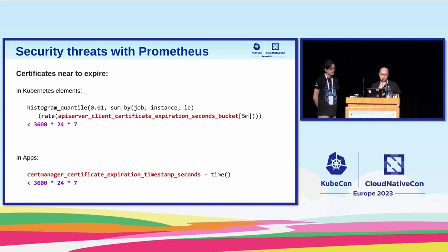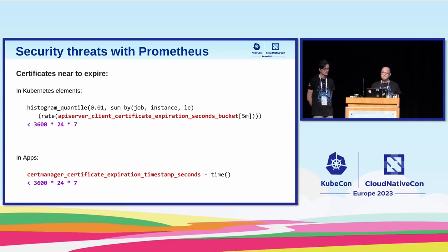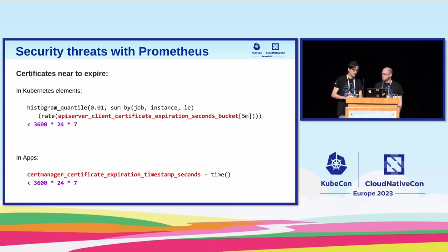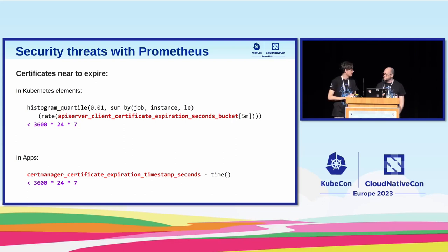In these two queries, we are checking near-to-expired certificates. In the first one, we are checking the expiration date of the certificates of the Kubernetes elements talking with the API server. In the second one, we are checking the certificates of applications. In case applications are using expired certificates, someone might try to do a man-in-the-middle attack and terminate the HTTPS connection early with fake certificates, then sniff or even alter the traffic during transfer.